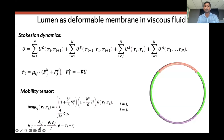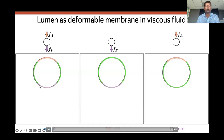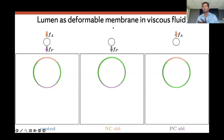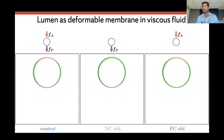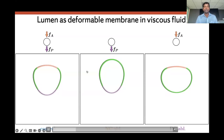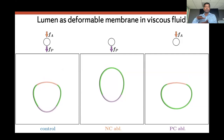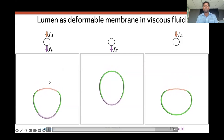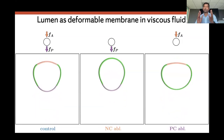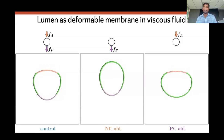In the hydrodynamic model, we show the motion with equal forces from top and bottom (control), with no force from the top (mimicking notochord ablation), and with force only from the top (mimicking posterior cell ablation). You can see that in the notochord ablation case the shape is elongated along the anterior-posterior axis, while in the posterior cell ablation case the order parameter is much smaller and the shape is more oblate. This simple deformable particle model can explain what is happening in the experiment.